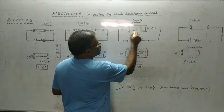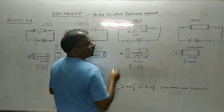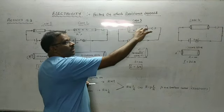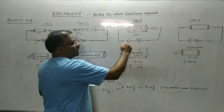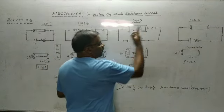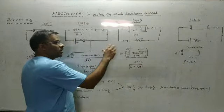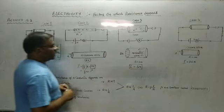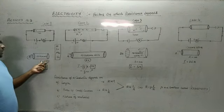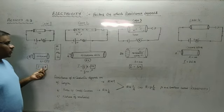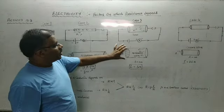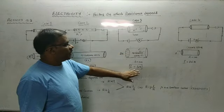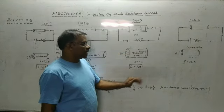A thicker wire means the charges can move more freely, so there is more current which can flow through the conductor. When the nichrome wire is 1 meter with a thin cross-section, only 2 amperes of current flows. But if we increase the area of cross-section, the amount of current in the circuit will increase.